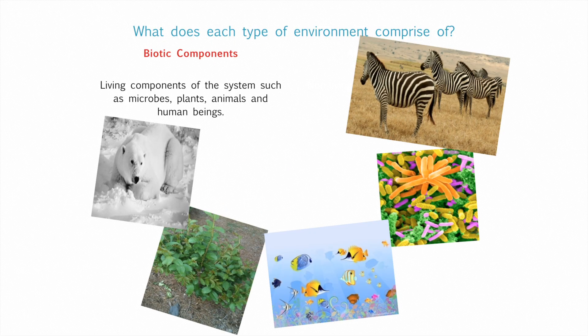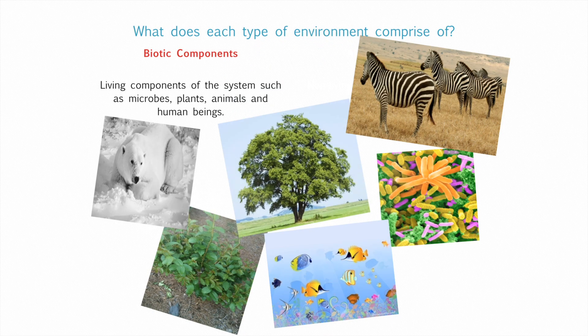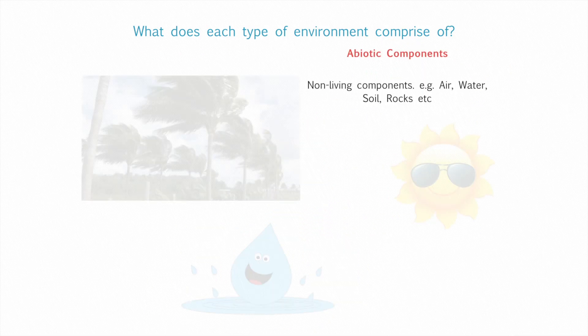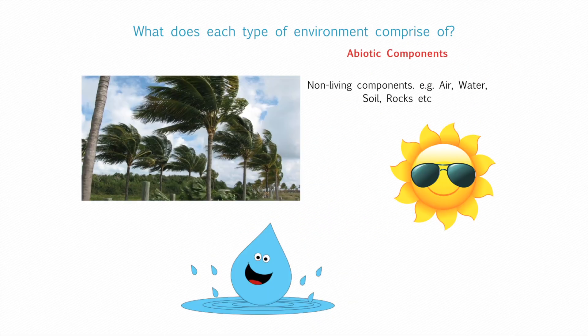Examples of biotic components include animals, plants, sea creatures, microorganisms, trees and many more. Examples of abiotic components include air, water, soil etc.